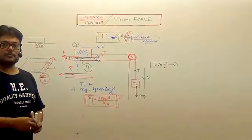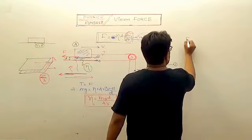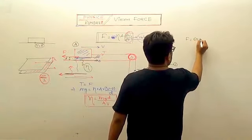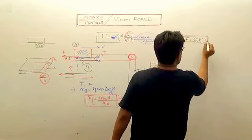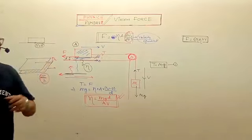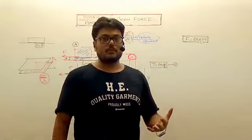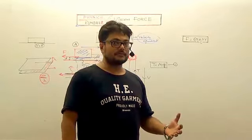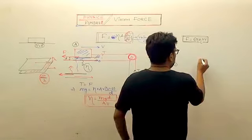You can also understand Stokes theorem. F is equal to six pi eta rv. Six pi eta R V is the viscous force on a spherical body moving inside the viscous medium.